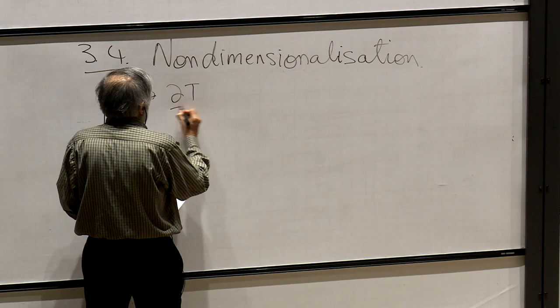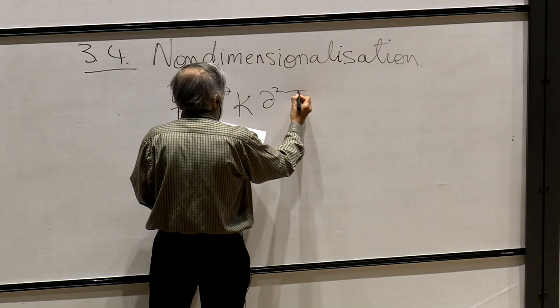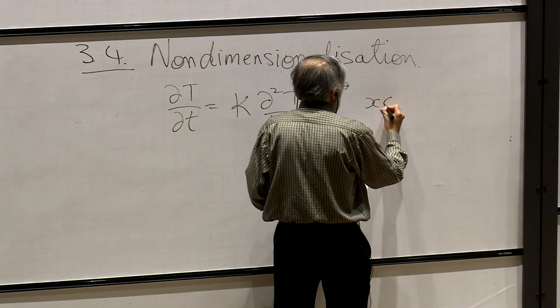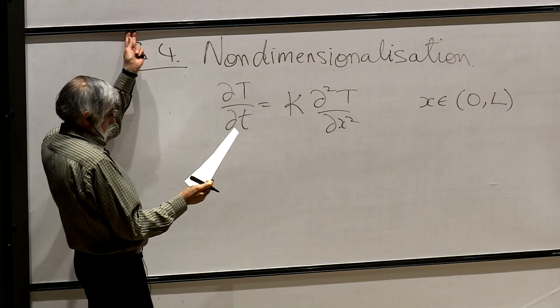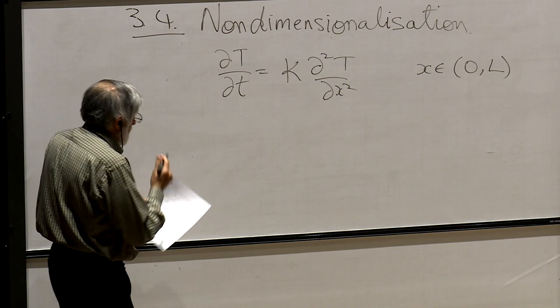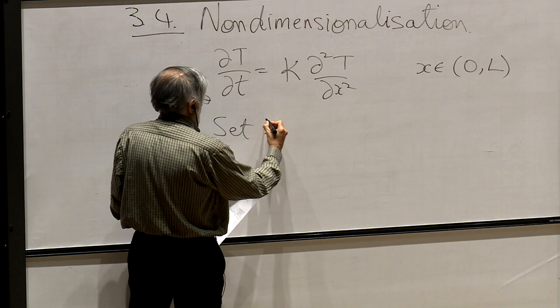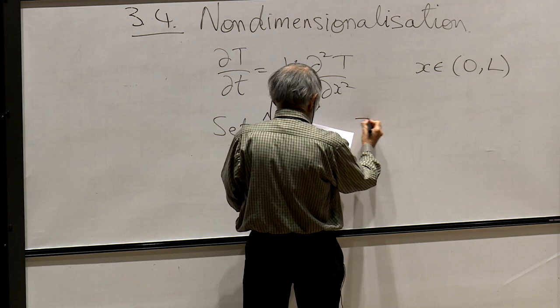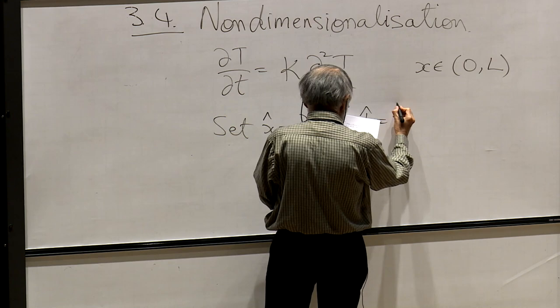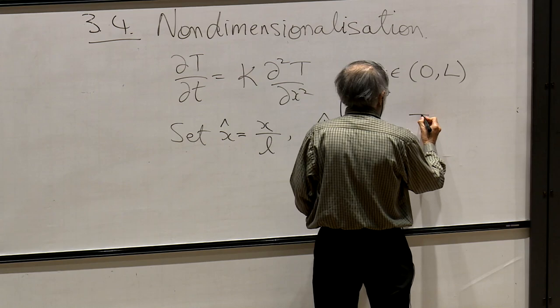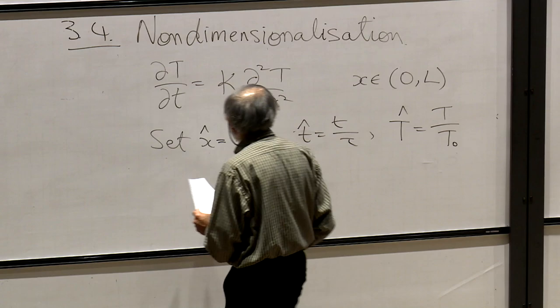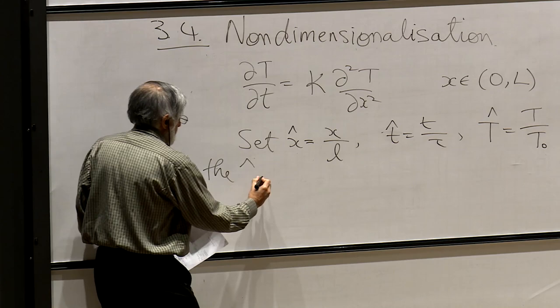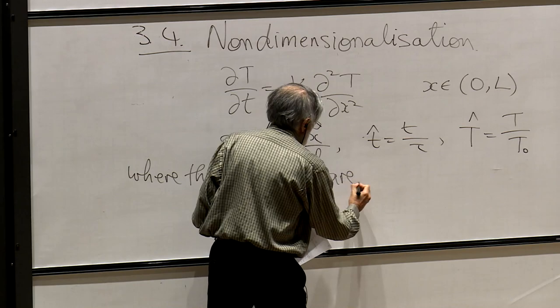So suppose we have dT/dt equals kappa d²T/dx², and x is on the domain 0 to L. What we do is the following: we set x-hat to be x over L, t-hat to be t over tau, and T-hat to be T over T₀, where the hat variables are non-dimensional.